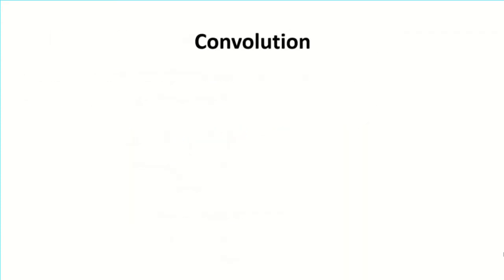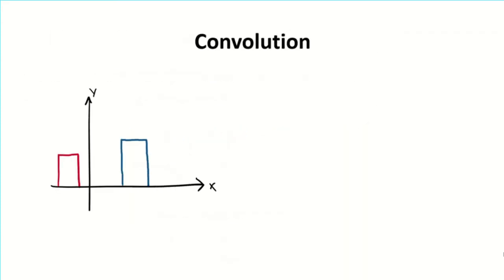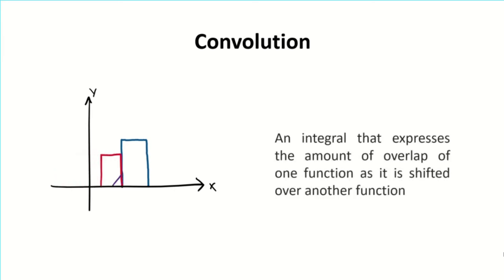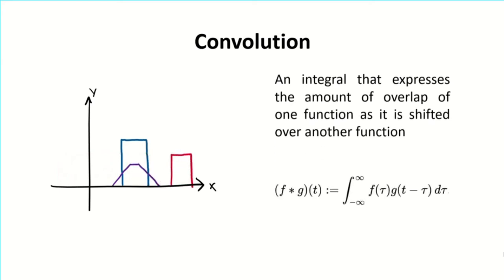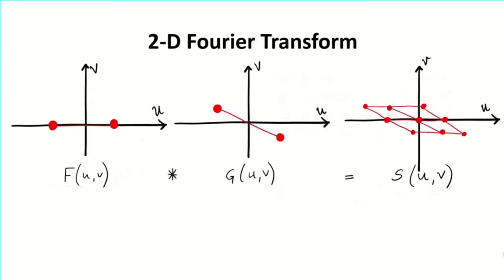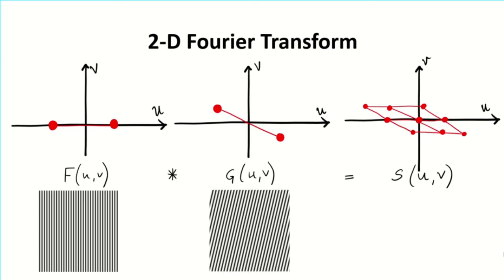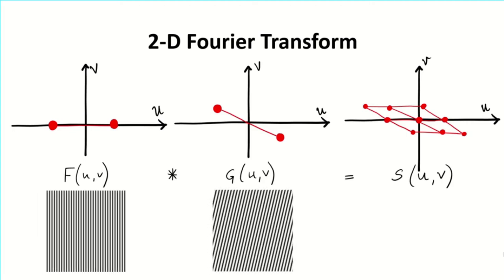But what is convolution? Consider two functions in the x-y domain represented by blue and red curves. Convolution is basically the overlap of one function over the other. It is mathematically represented as the integral of the product of one function and the reverse-shifted second function. Using these mathematical techniques, we can produce grids like these and moiré patterns like this one.